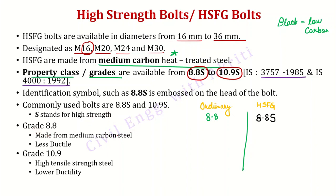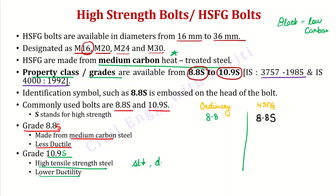The 8.8 grade is made by medium carbon steel and has less ductility compared to lower grades. The 10.9S grade is made from high strength steel and its ductility is even less. As we know from earlier lectures, as strength increases, ductility decreases.